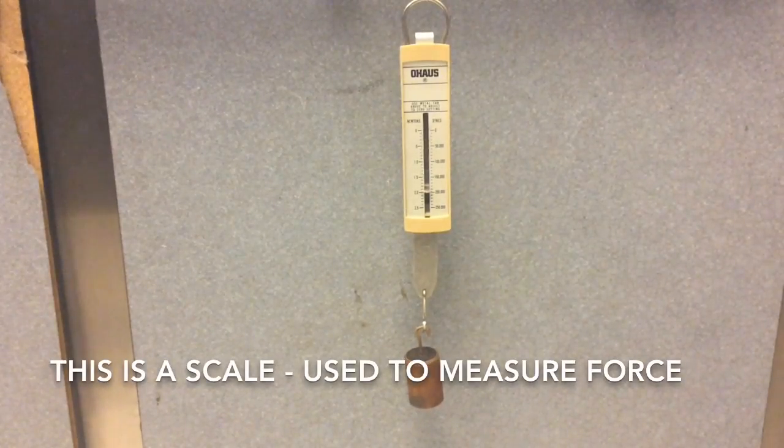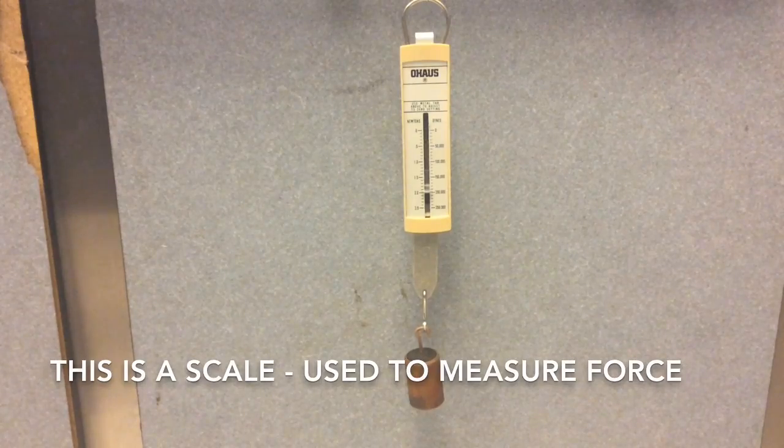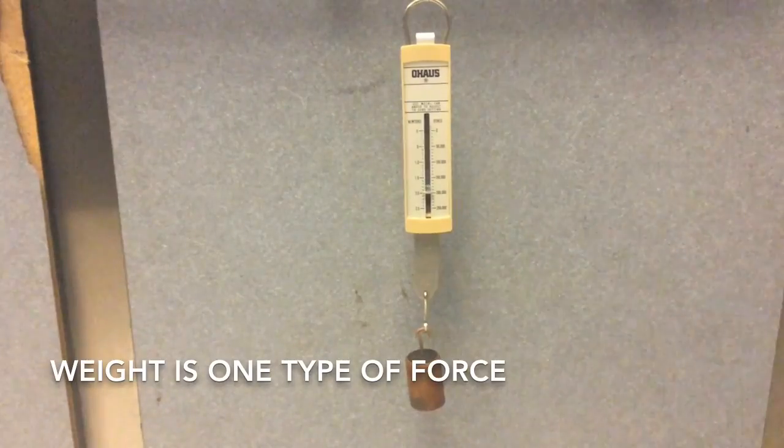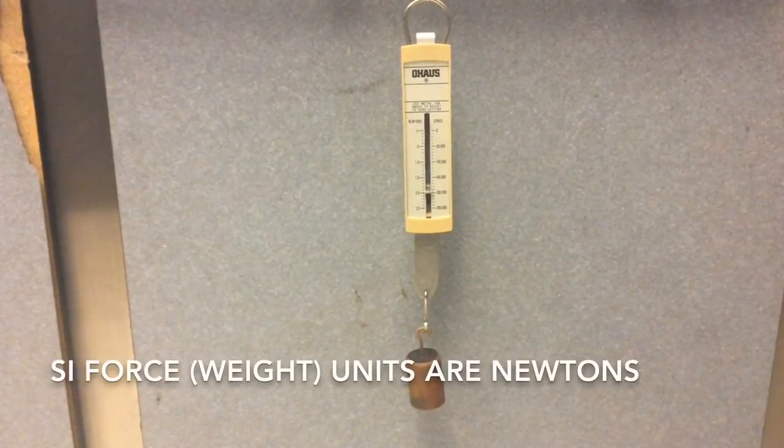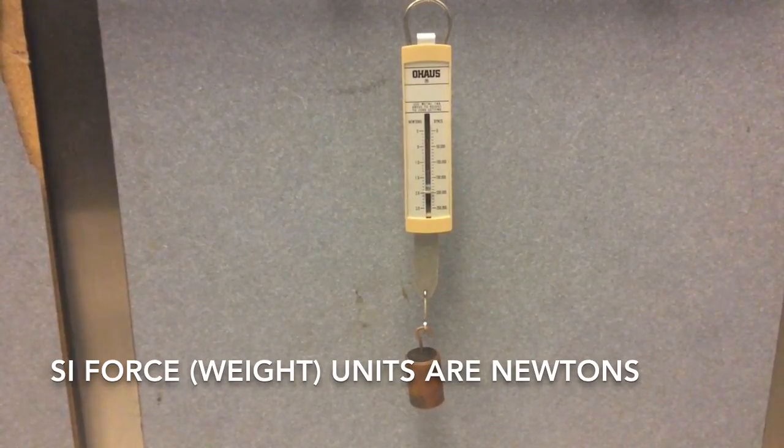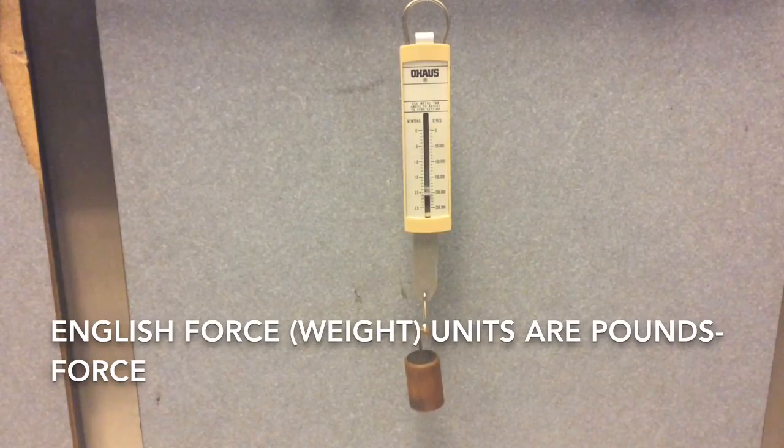This is a spring scale. It's one kind of scale, a device used to measure force. Weight is one kind of force, and if this scale is stationary or at a constant velocity, you can measure the weight with it. The SI or metric unit of weight or force is newtons, and the English or imperial unit is pounds force.